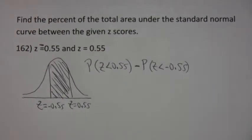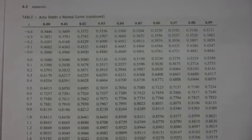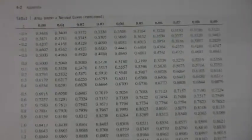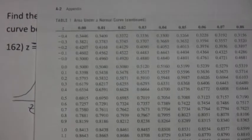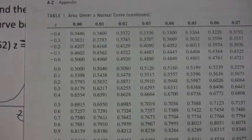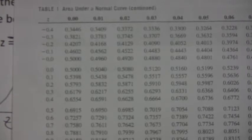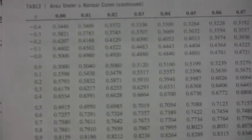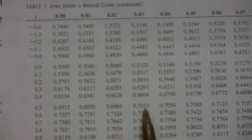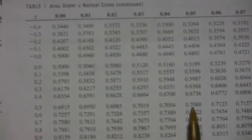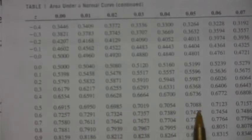When you look up 0.55 in the table, you get this number, which is 0.7088.